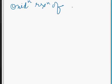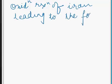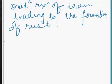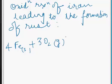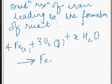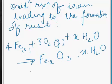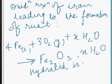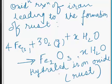The oxidation reaction of iron leading to the formation of rust can be written as follows. The chemical reaction is: 4Fe reacts with 3O2 and xH2O to give Fe2O3·xH2O. This is hydrated iron oxide, or we can say this is rust. This is the chemical formula for rust.